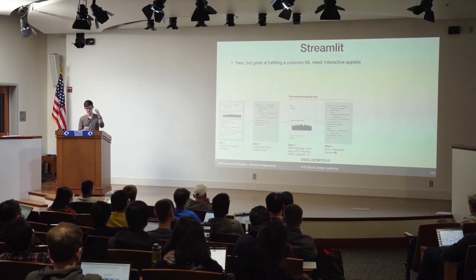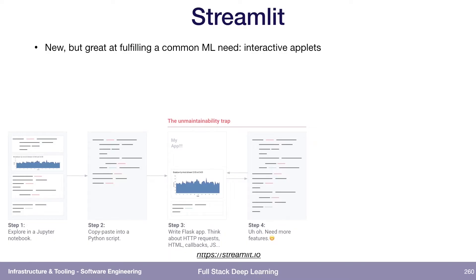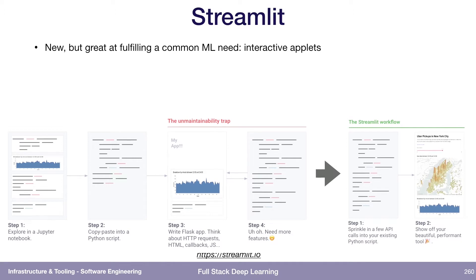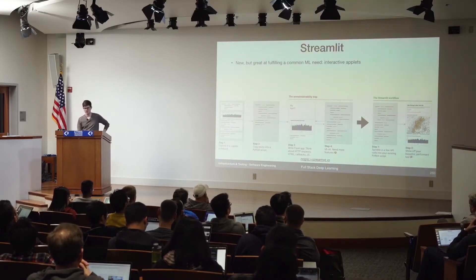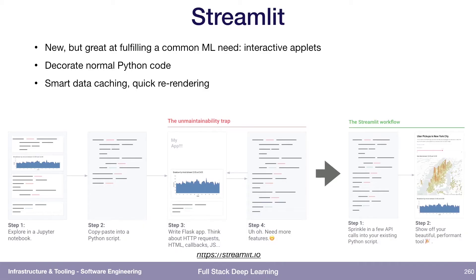The traditional workflow is: you have a notebook, you got some cool stuff, you put it in a Python script, and if you run it it gives you the figure. But if you want to share it, now you have to write a web server around it using Flask, then you need some JavaScript for the slider and so on. Pretty soon you're in the unmaintainability trap — you were doing data science, but now you have a web app you have to maintain. The Streamlit workflow solves that by giving you nice primitives as function decorators. If I have a function that renders a plot and I need a slider to control one of the parameters, I can decorate it with one line of code using the Streamlit library and get a cool little applet to play around with.